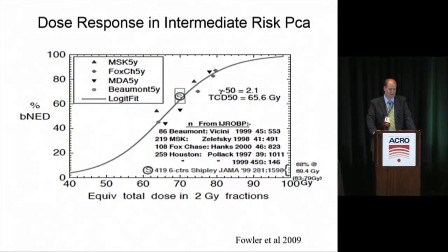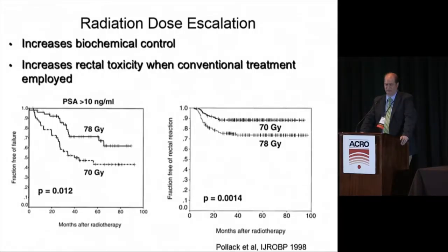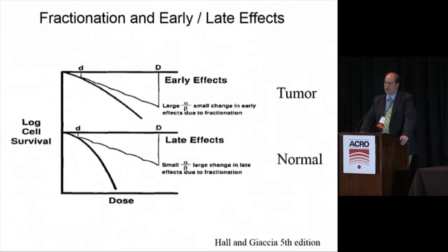Let's start with dose response in prostate cancer. From Dr. Fowler back in 2009, looking at biochemical control from a number of series based on equivalent two gray fractions for standard fractionated radiation therapy, there is a clear dose response. This was demonstrated to have an advantage in the MD Anderson dose escalation trial, where escalating radiation therapy by eight gray showed about a 15% improvement in biochemical control at 10 years, albeit at the cost of increased GI toxicity.